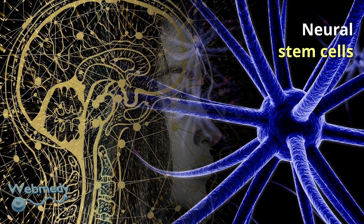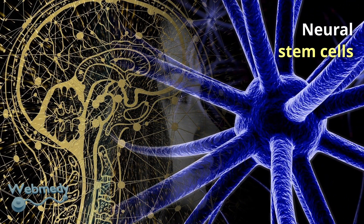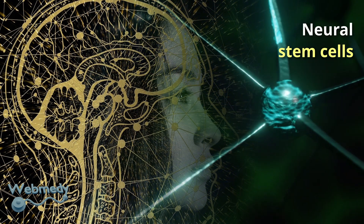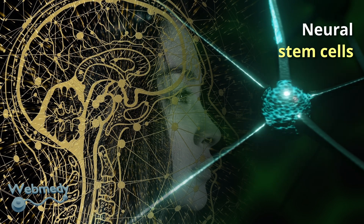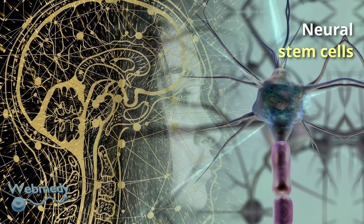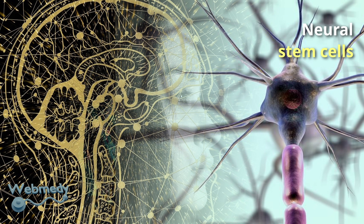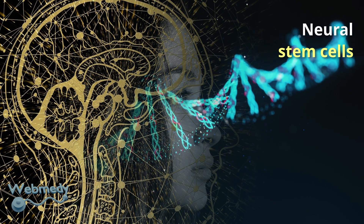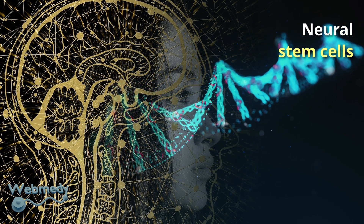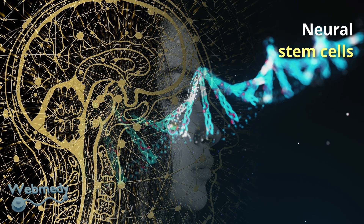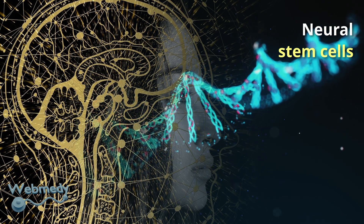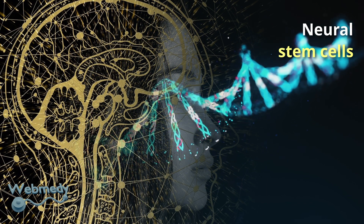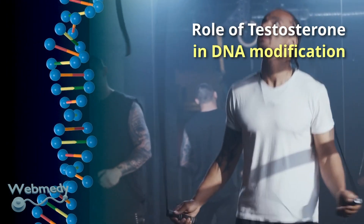Neural stem cells are responsible for generating new neurons in the brain and can be affected by DNA modifications. For example, studies have shown that DNA methylation can regulate the differentiation of neural stem cells into different types of neurons. Neural stem cells can differentiate into different types of neural cells, including neurons and glial cells, and have the ability to change their DNA through a process called epigenetic regulation.